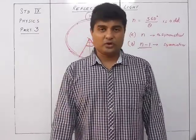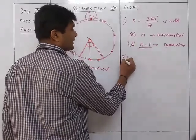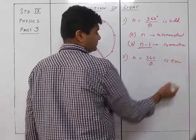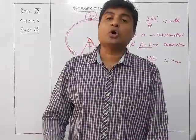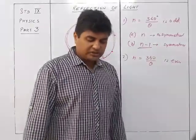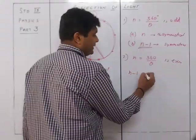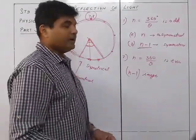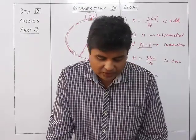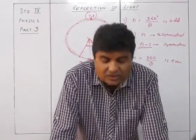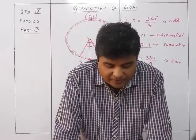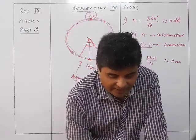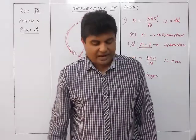Second case: if n = 360°/θ is an even number, the number of images is always n − 1 for all positions of the object, whether symmetrical or asymmetrical. For example, if the angle between mirrors is 60°, n = 6, so 6 − 1 = 5 images are always formed regardless of object placement, because the last two images always overlap.